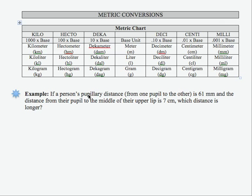In this example, we're told that a person's pupillary distance from one pupil to the other is 61 millimeters, and the distance from their pupil to the middle of their upper lip is 7 centimeters. So which distance is longer?